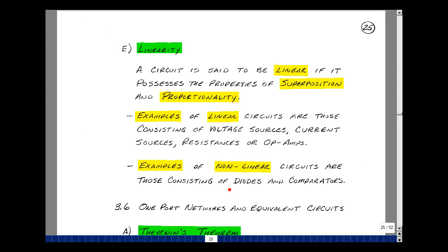Examples of non-linear circuits are those consisting of diodes and comparators, or op-amps that saturate. And this is the idea of proportionality and linearity.